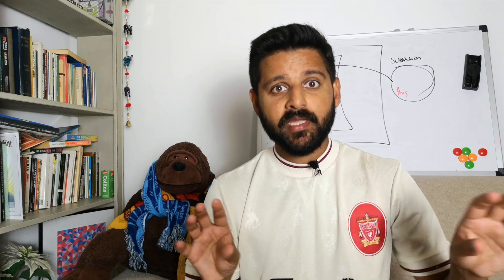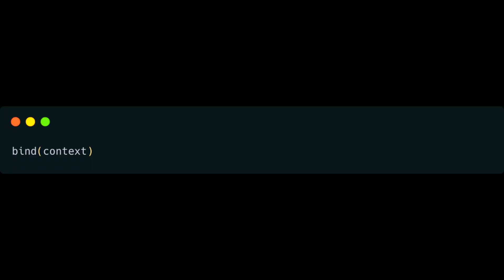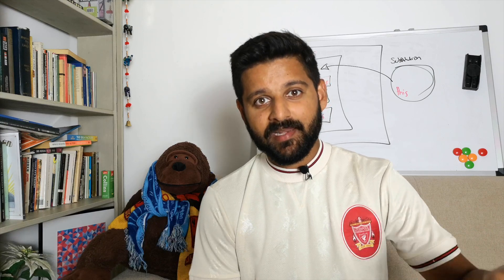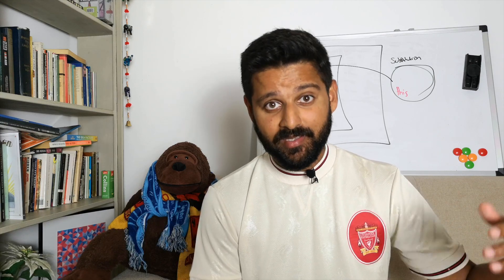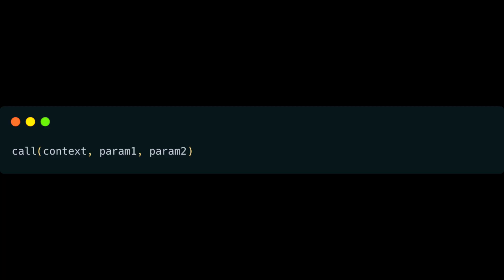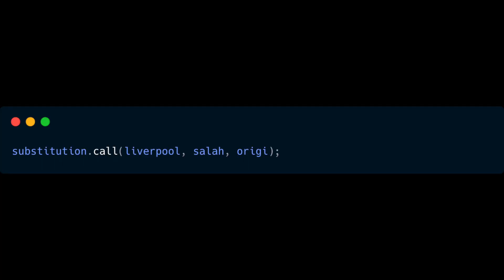Call and apply work in a very similar way, so let's group them together and create some separation between them and bind. Bind just takes one parameter which is the context, and when you execute it you pass in whatever parameters the initial function needs. With call and apply they execute straight away, so you need to give them those parameters immediately. For call, the first parameter is always the context — that's the same for apply as well.